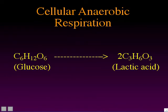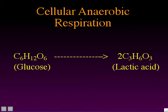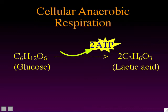Here is cellular anaerobic respiration written as a chemical reaction: each glucose molecule that goes through cellular anaerobic respiration gets broken down into two molecules of lactic acid (C3H6O3). For each glucose that goes through this process, the cell is able to recharge two ATPs.